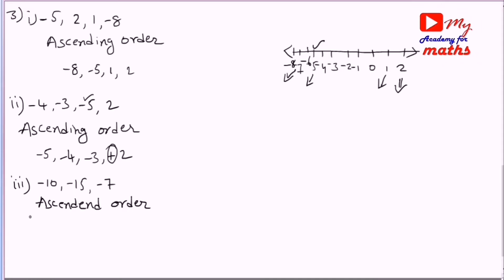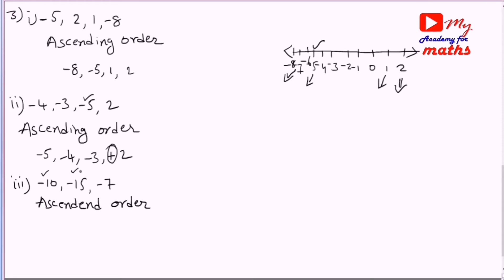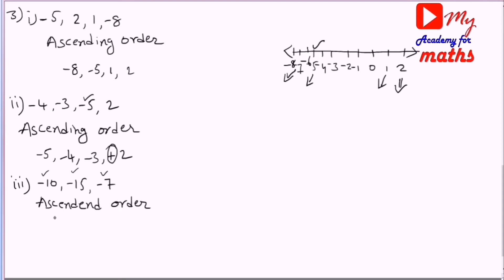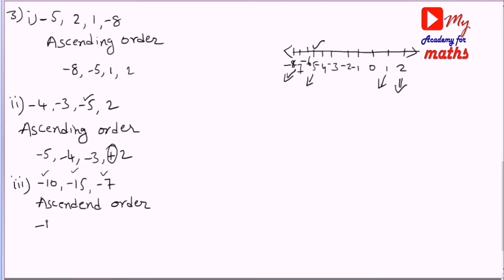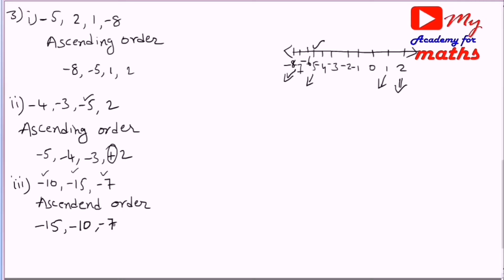The number with the negative value is the very smallest. Minus 15 is the smallest, that's why it comes first, then minus 10, then minus 7 in ascending order.